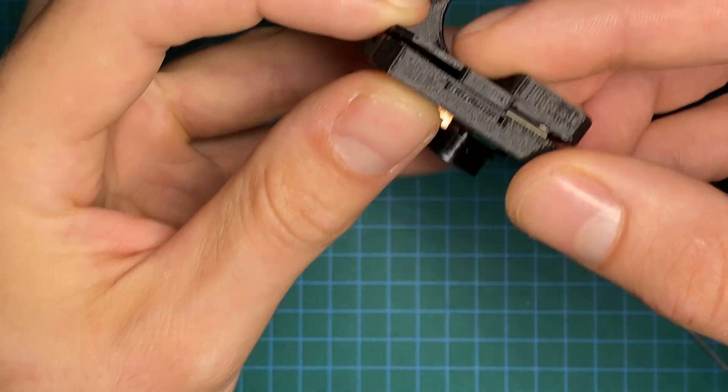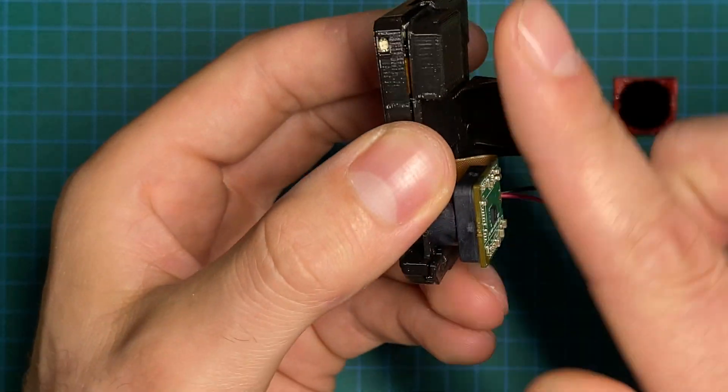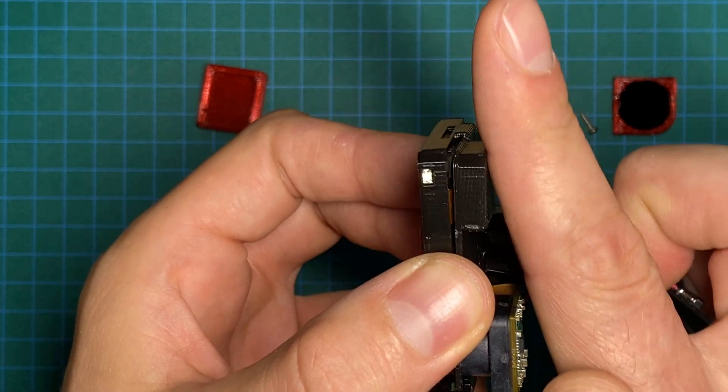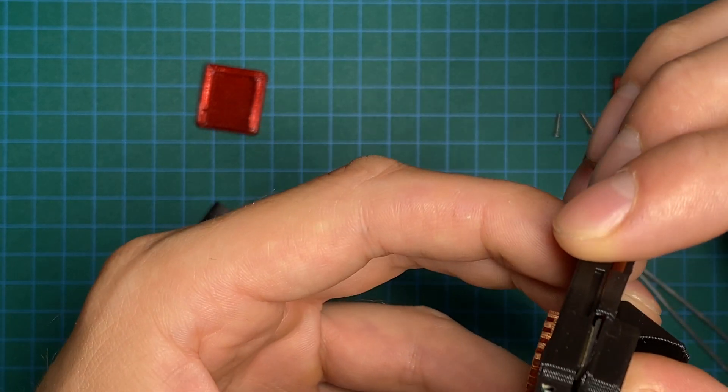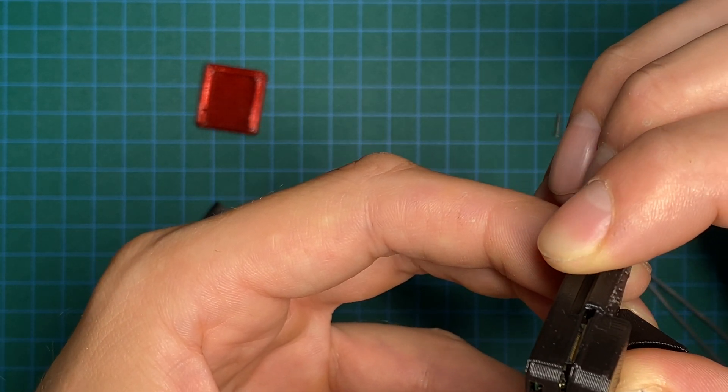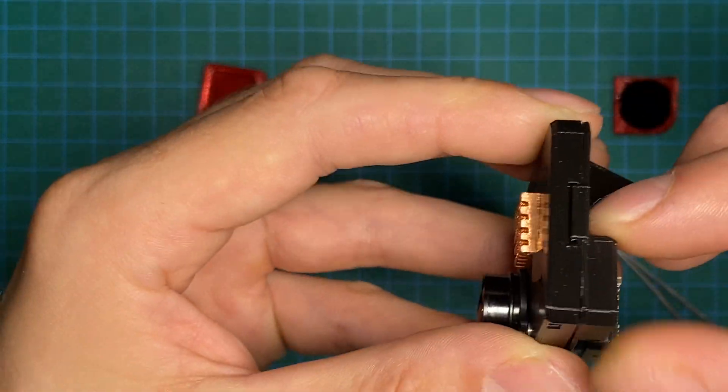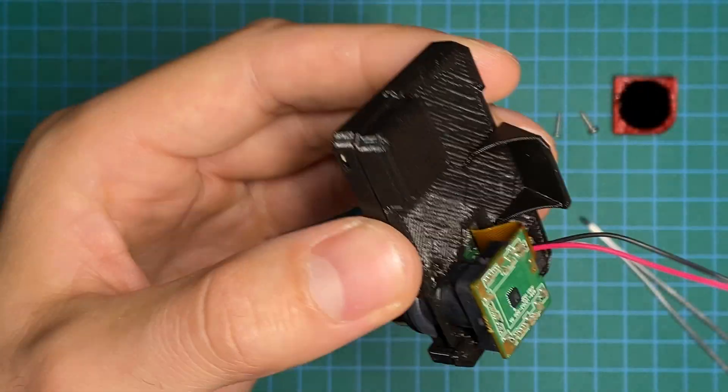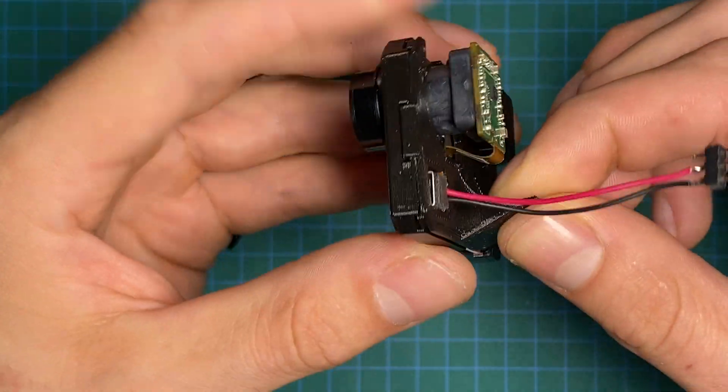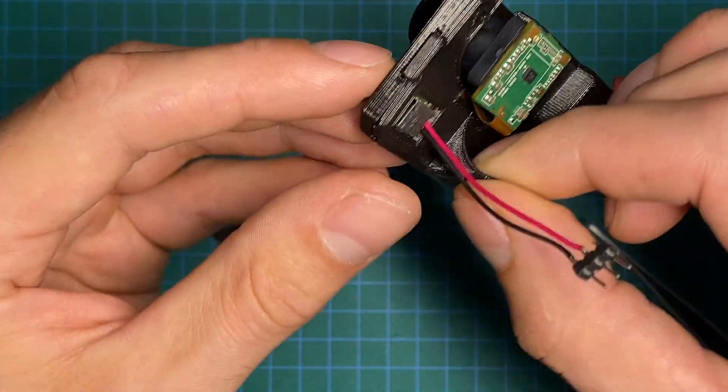And then you go to the other side. Pull the back plate a bit over the edge. And it should just click in. Nice and tight. So this is a very tight fit.